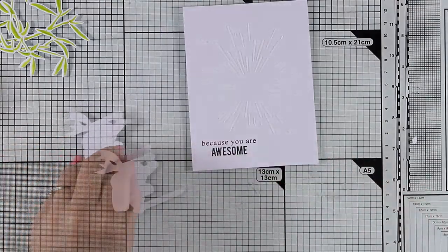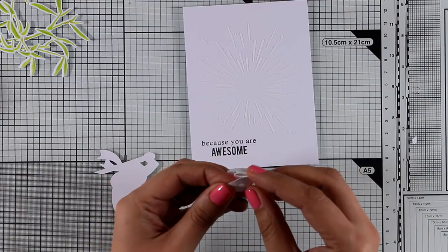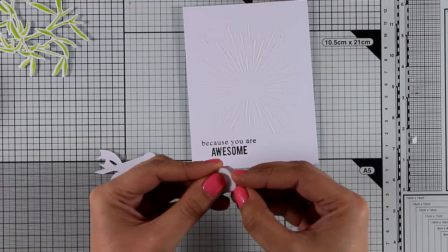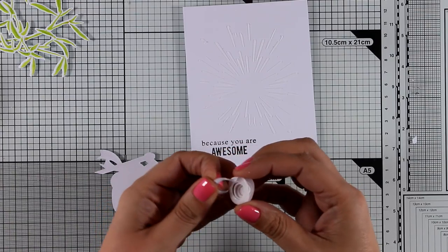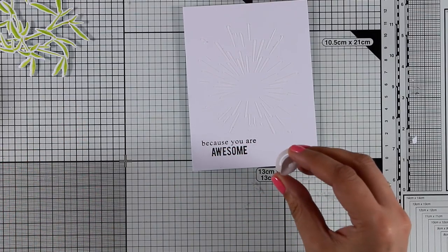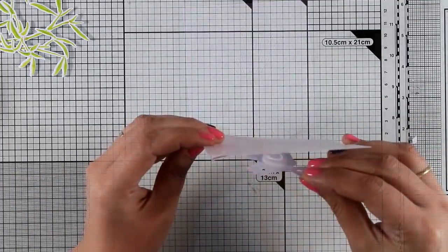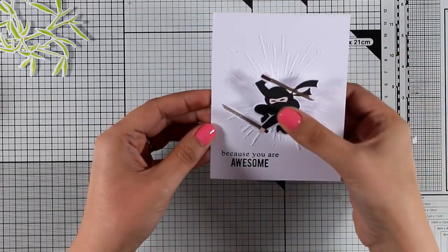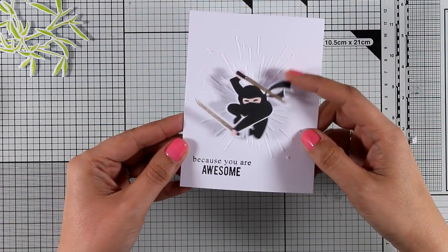To make my card really fun, I'm going to stick my ninja with one of those mini wobbles. So this is actually a spring, and I'm going to stick one part at the back of my ninja and the other part on top of my card base. I'm peeling off the other side and then I'm going to stick this ninja on my panel, making sure that he is nicely centered at the texture that I already have there.